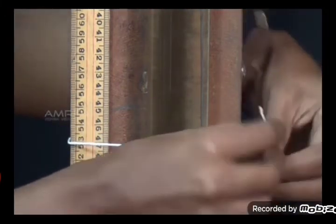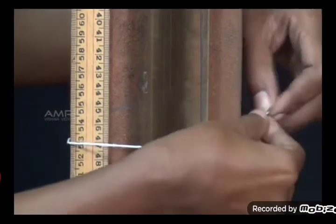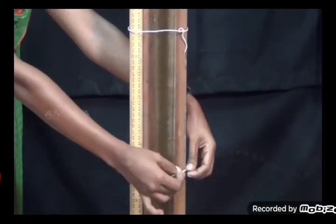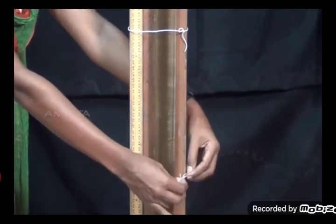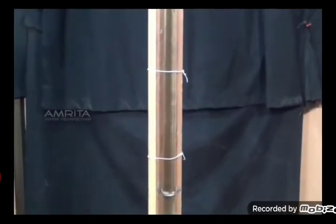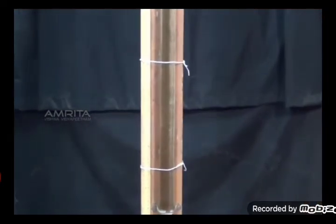Mark two reference points A and B on the jar. Adjust the position of the thread B so that the distance between A and B is 70 cm. Place the funnel near the mouth of the tube.